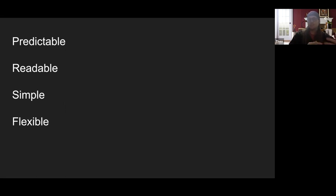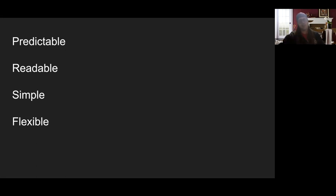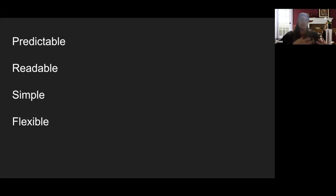Those are roughly in order of importance — predictable is more important than simple, readable is more important than flexible. That's why I caught myself earlier when I said trying to make code as short as possible, because that's not the most important thing. Over this talk, I'm going to go through each of these principles and talk about what they mean with modern syntax. JavaScript is exciting because every year we're getting new syntax and new features. If you don't have a good set of principles for what makes good code, it's tough to think about how new features fit into the code you're writing.